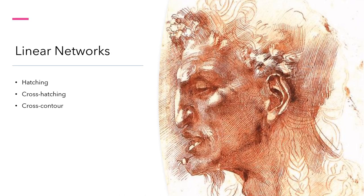Here is another method, pretty exclusive to the arts, though graphic designers sometimes utilize it. This is called a linear network — lines that artists use to create a range of values, or darks and lights. Michelangelo used methods like hatching, cross-hatching, and cross-contour line drawings to sketch this particular subject. We're going to go over each one of those.